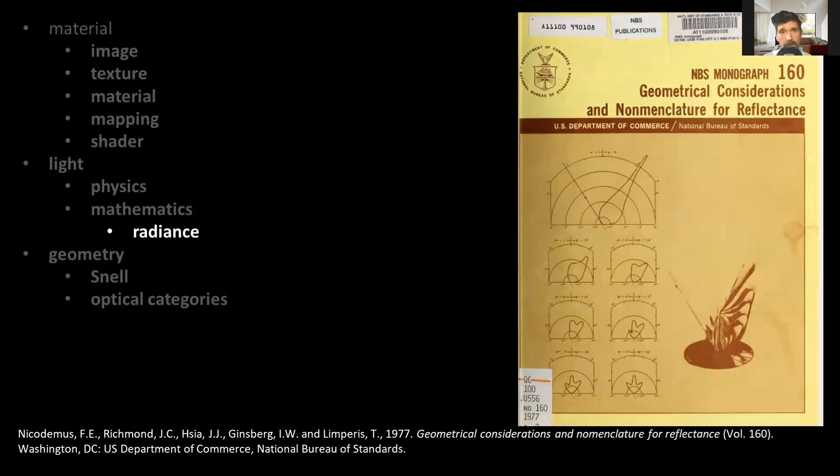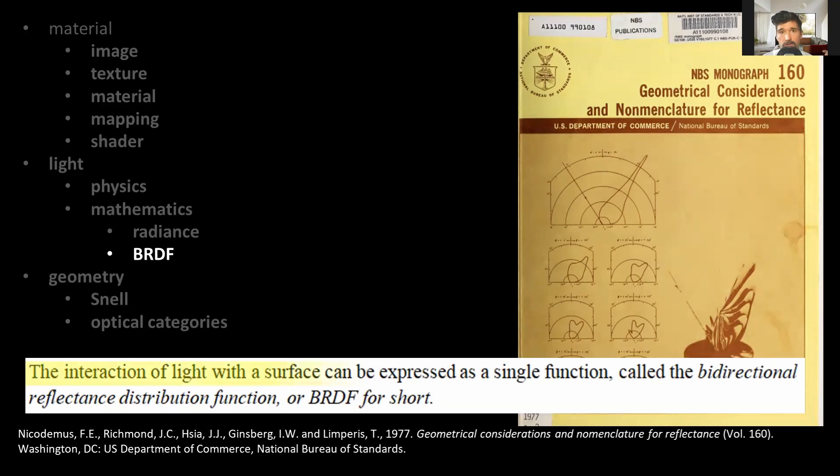However, this behavior was examined back in 1977 in this book, Geometrical Considerations and Nomenclature for Reflectance, introducing a term called BRDF. The book states that the interaction of light with the surface can be expressed as a single function called the bidirectional reflectance distribution function or BRDF for short.